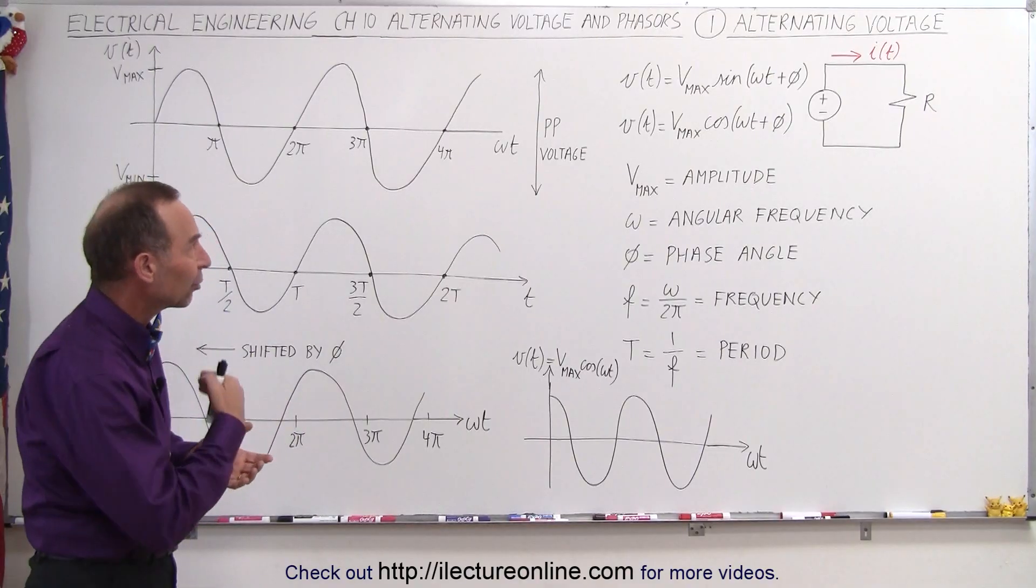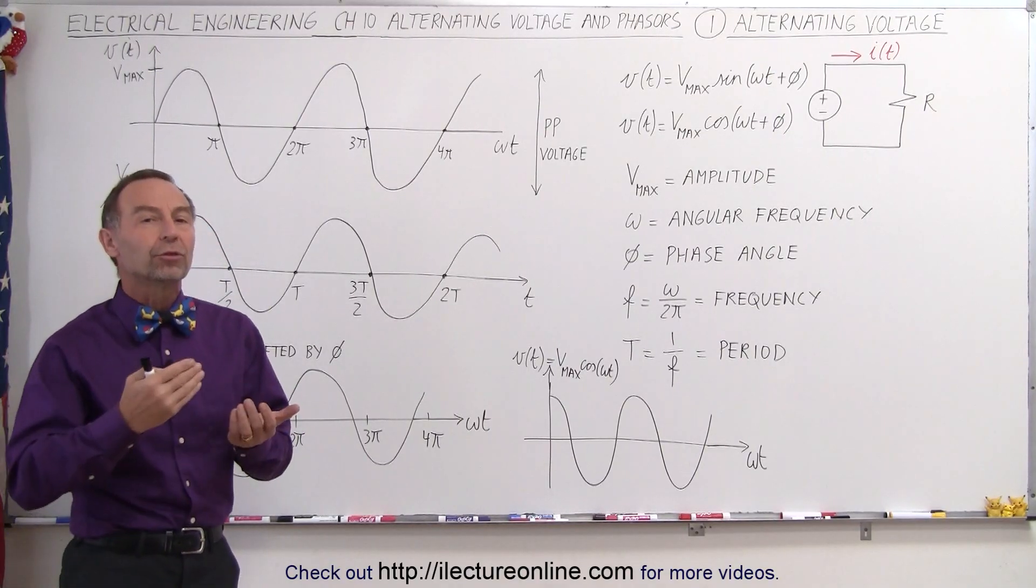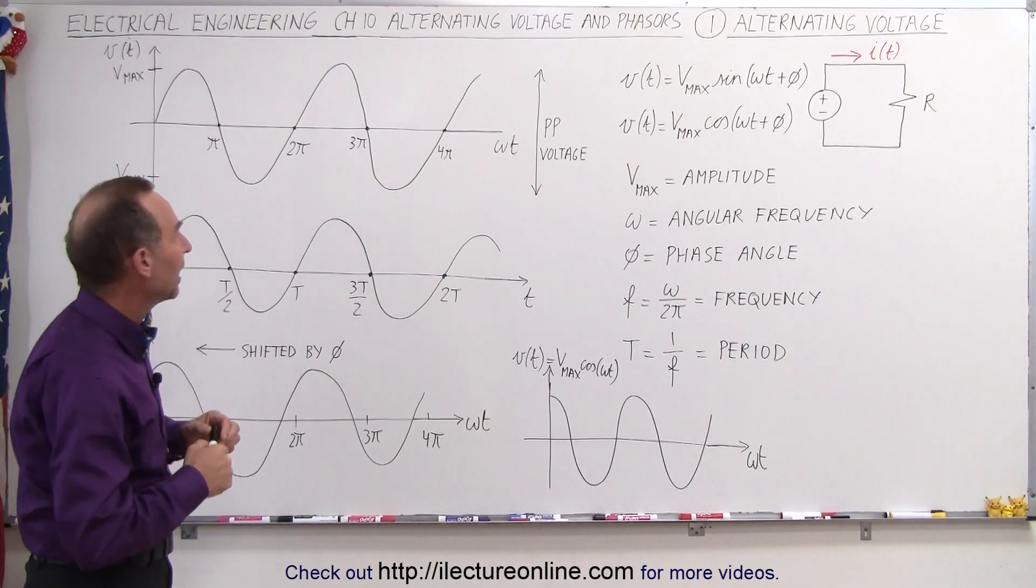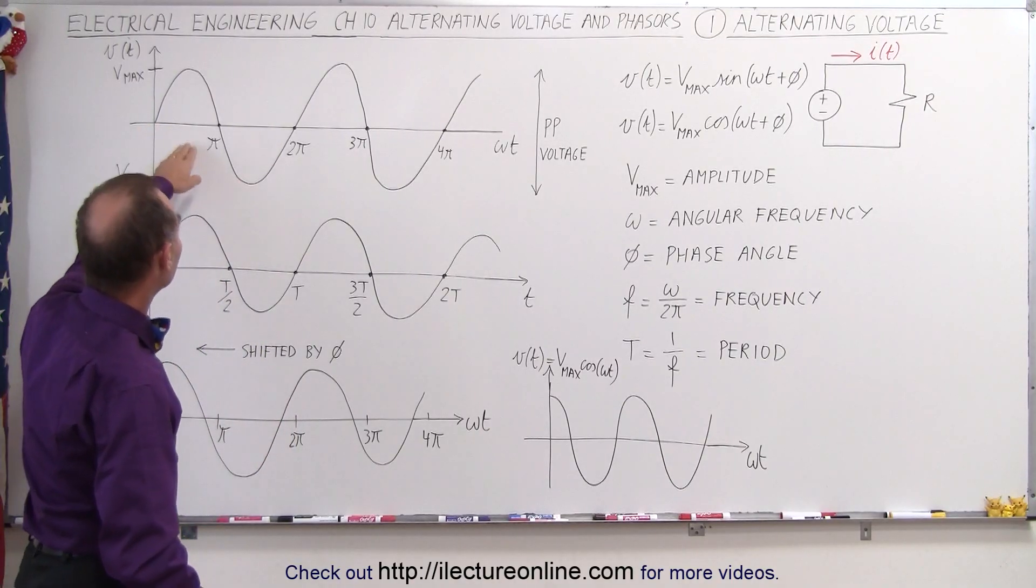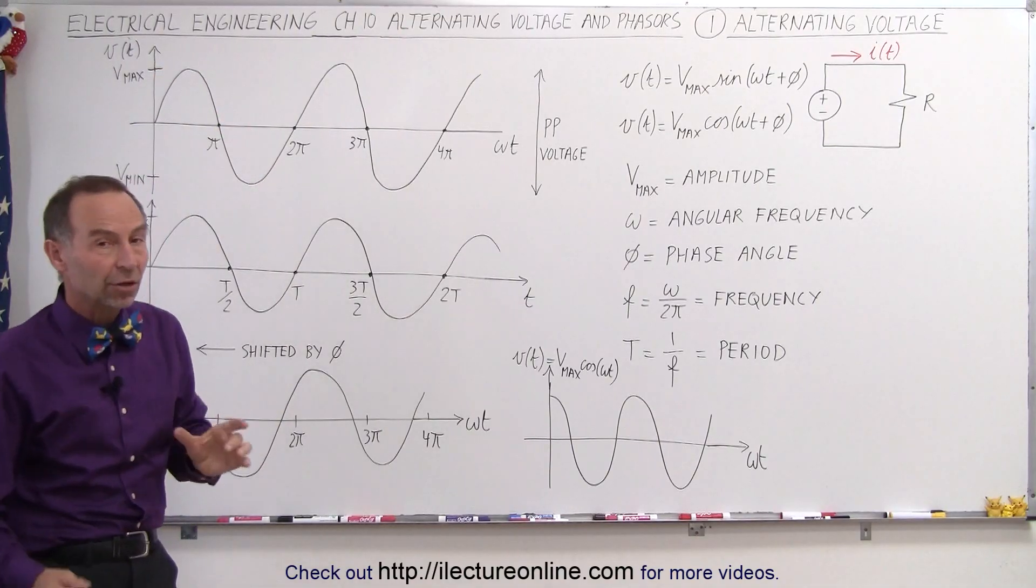So what do we mean by a sinusoidal voltage? It's what we call an alternating voltage. It alternates over time, and you can see if you look at the graph that sometimes the voltage will be positive in one direction, and then it will be positive in the other direction.